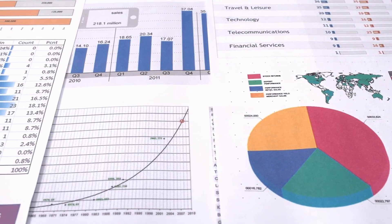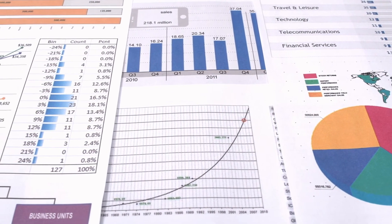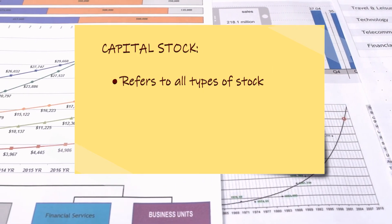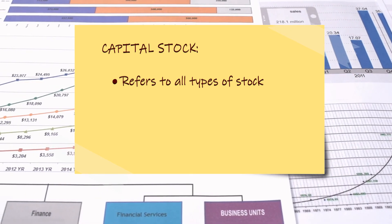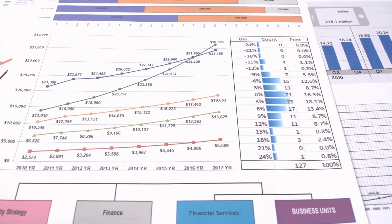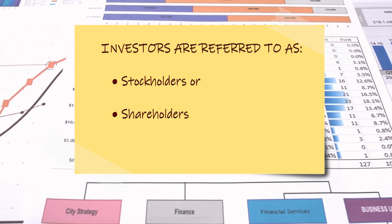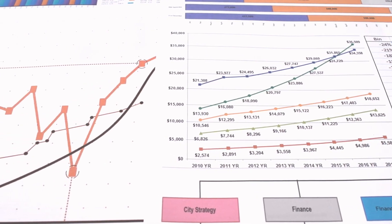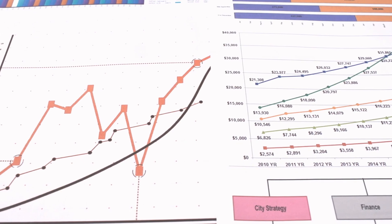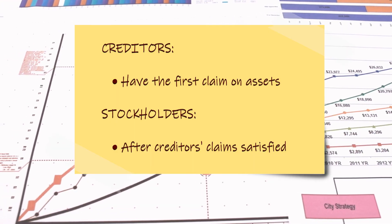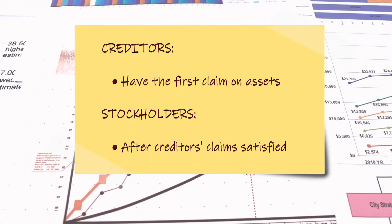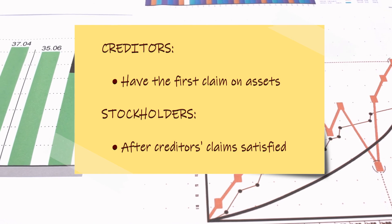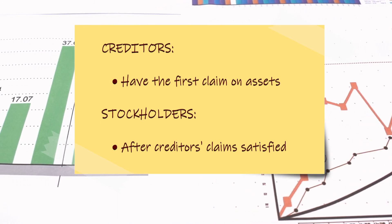Operations may issue a variety of different types of stock. The most common type is called common stock. The term capital stock refers to all the types of stock the corporation may issue. Investors who purchase the stock are referred to as stockholders or shareholders. Creditors and stockholders have different claims on the assets of a corporation. Assets are the resources owned by a company. Creditors have the first claim on the company's assets, and stockholders have a right to the corporate assets only after the creditors' claims are satisfied.